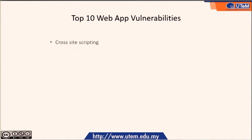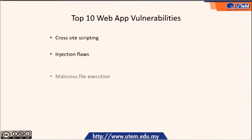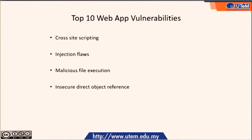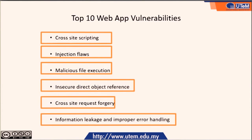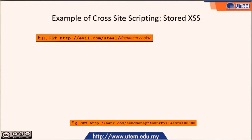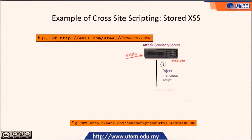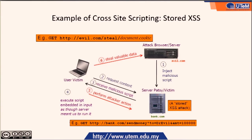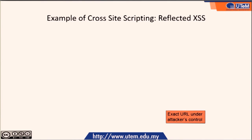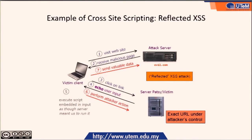The top web vulnerabilities include: Cross-site scripting, Injection flaws, Malicious file executions, Insecure direct object references, Cross-site request forgery, and Information leakage and improper error handling. Examples of stored cross-site scripting and reflected cross-site scripting are also presented.